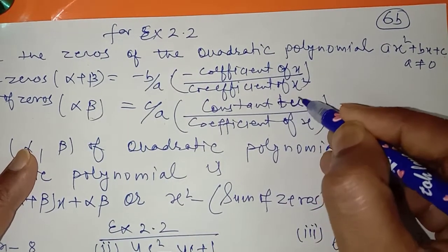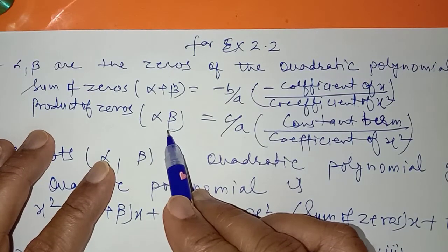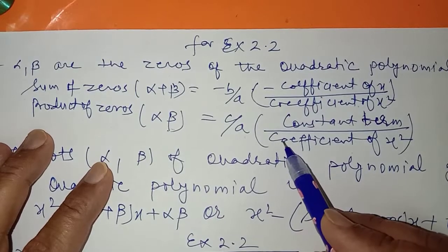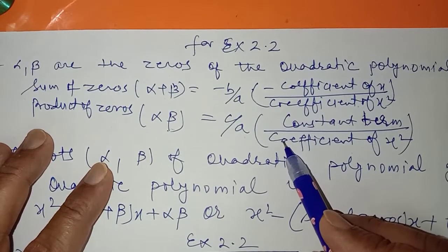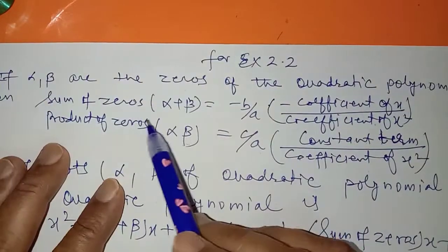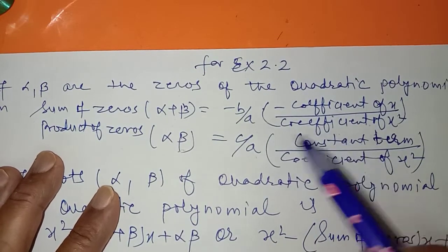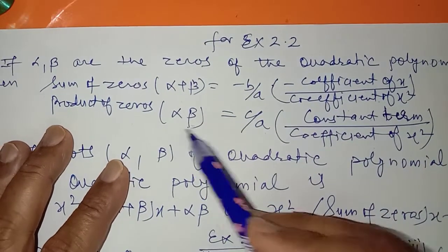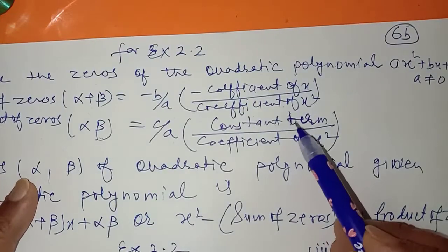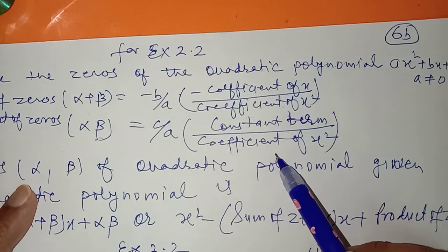This is the relationship between the product of the roots and the coefficients of the quadratic polynomial. You need to learn: sum of the roots equals minus b upon a, which means minus coefficient of x upon coefficient of x squared. Alpha into beta equals c upon a, that is the product of the root equals the constant term upon the coefficient of x squared.